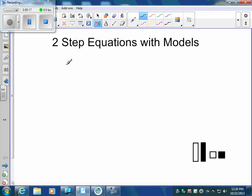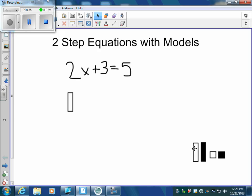Let's start with our first equation. Let's say that we have 2x plus 3 equals 5. It's just like before, we have 2x's. So I'm going to drag 2x's and 3 positive tiles equaling 5 positive tiles.